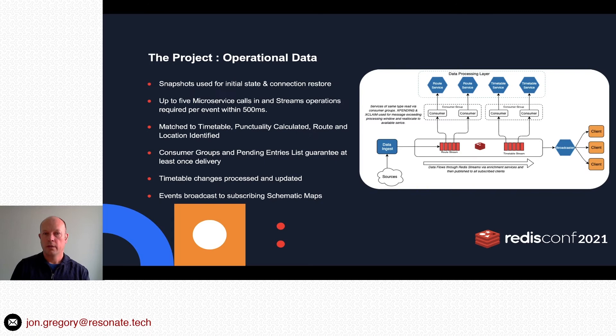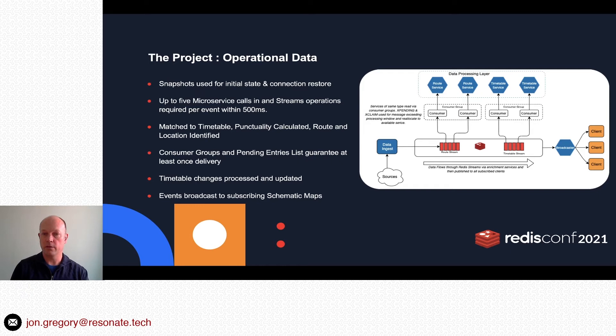How are these screens driven? We have two groups of data: live operational data and replay data. For operational data, we ingest data from sources, do basic validation, and move it into Redis Streams. The streams flow through the microservices, and out the other side a broadcaster manages client subscriptions to maps and broadcasts the events out.